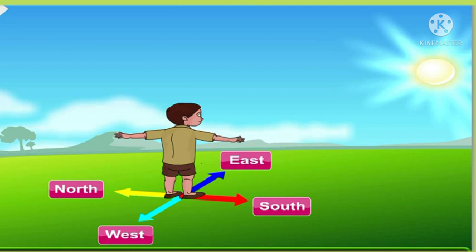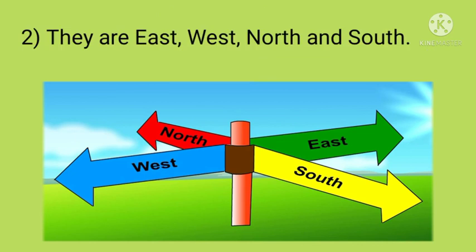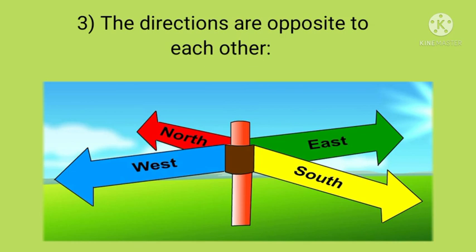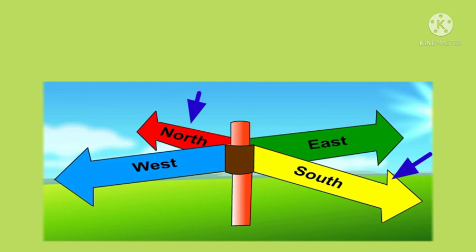These are the directions. What you are going to remember: first, there are four main directions. Second, they are east, west, north and south. Third, the directions are opposite to each other — you can see in the picture. East is opposite to west, and north is opposite to south.